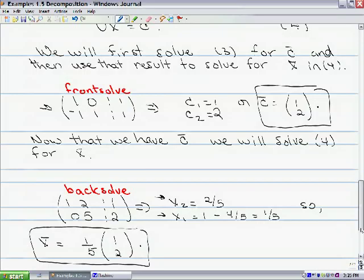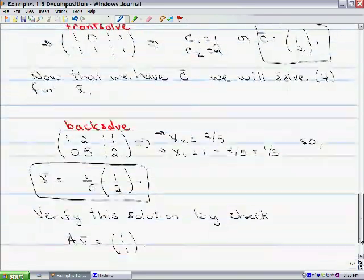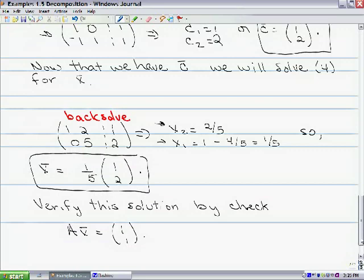and recall that we can't factor out any scalars to just simplify. So what you might want to do now is verify that the solution that we found, X equals 1 fifth times 1, 2, actually solves the equation AX equals 1, 1. And this concludes our simple example on how we would use the LU decomposition to solve a system of equations.